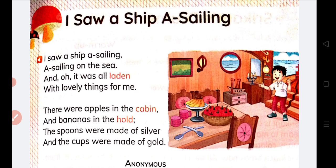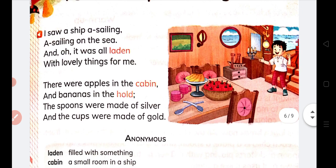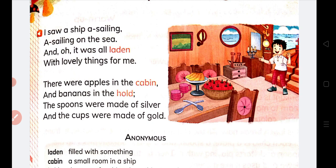It is a short poem based on imagination — a child imagines that he sees a ship, sees a cabin, a hold where things are kept, silver spoons and golden cups. So it is just an imagination, students. This was all about the meaning of this poem — the child sees a ship and sees all the other things.